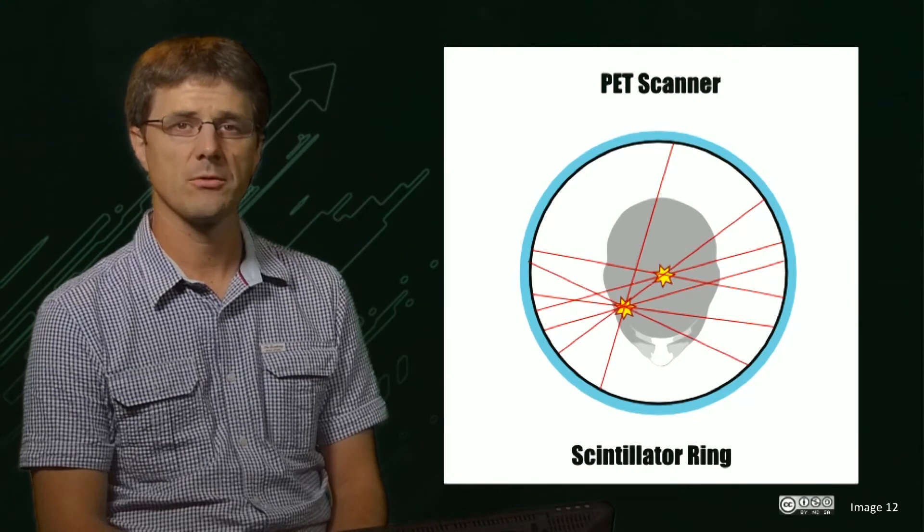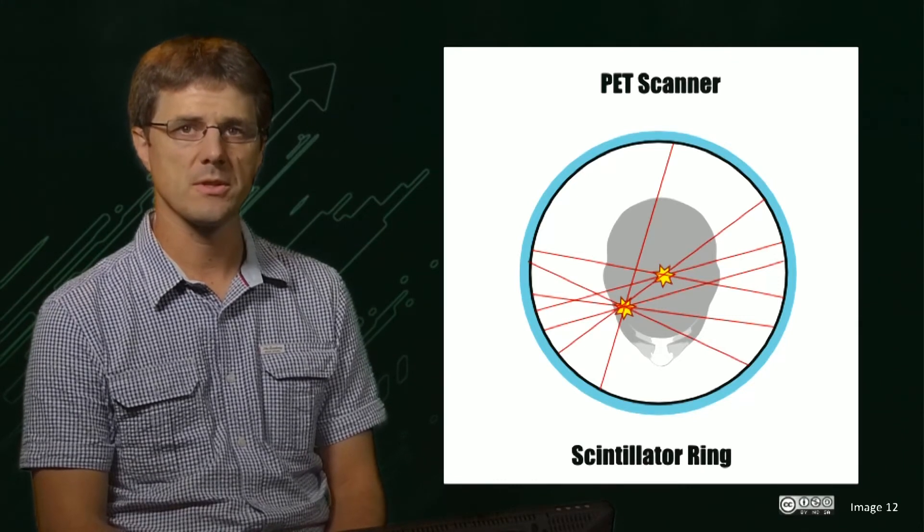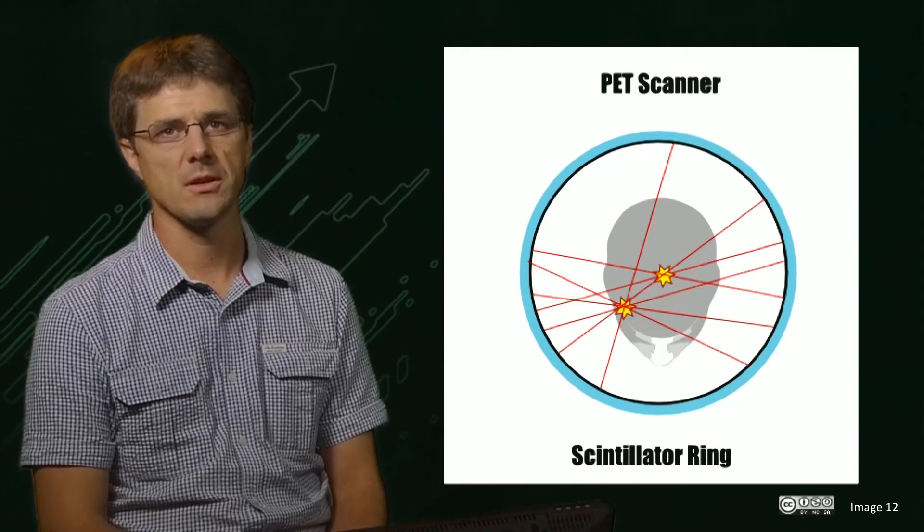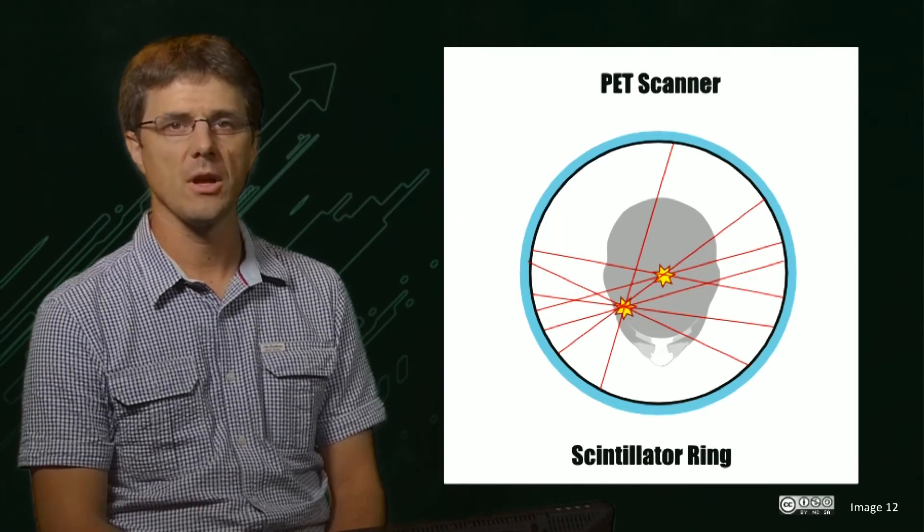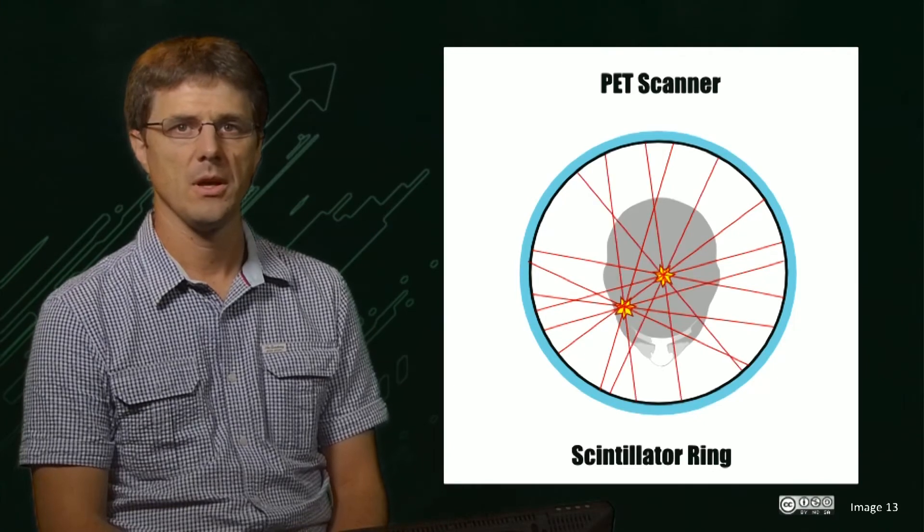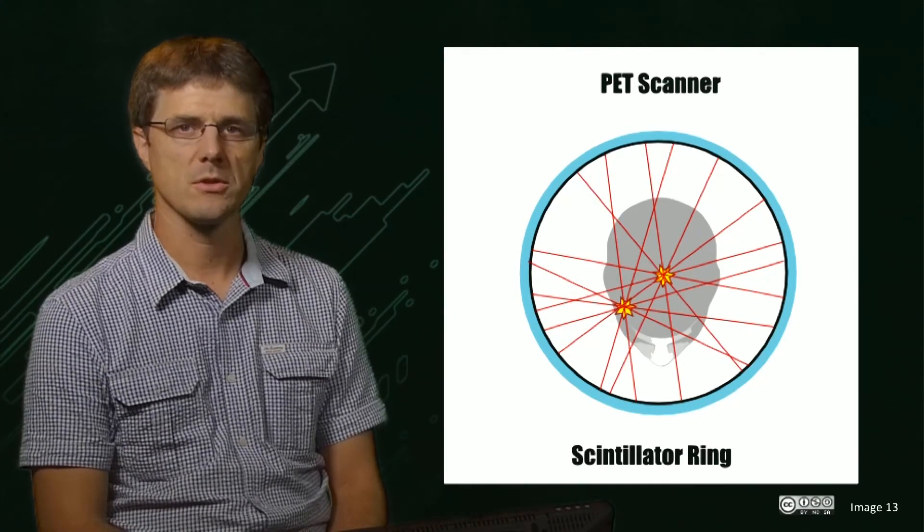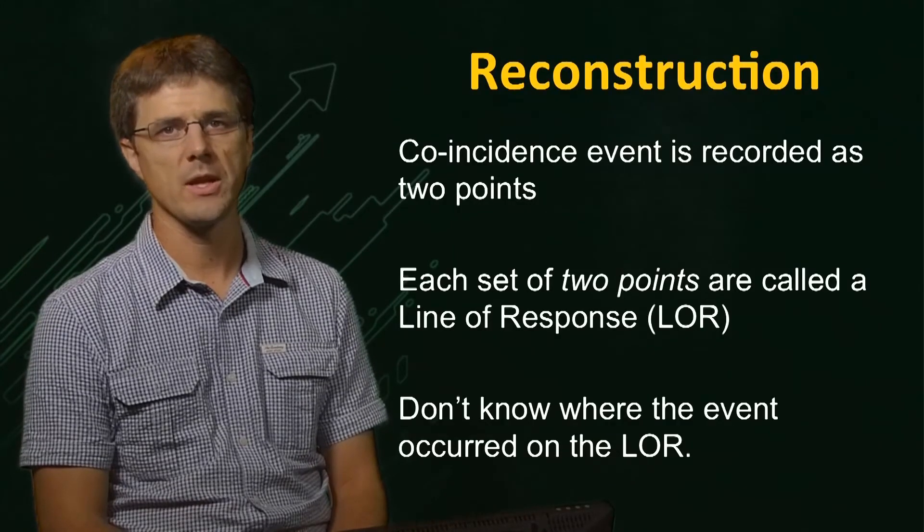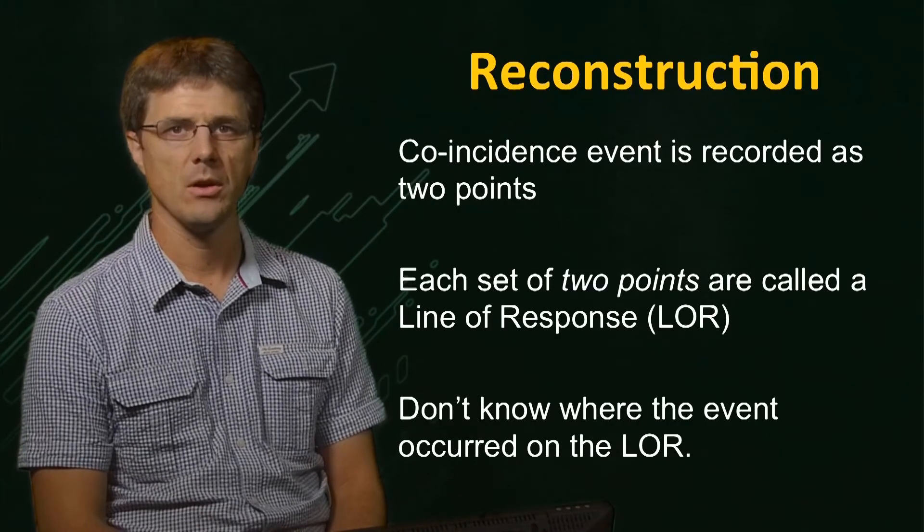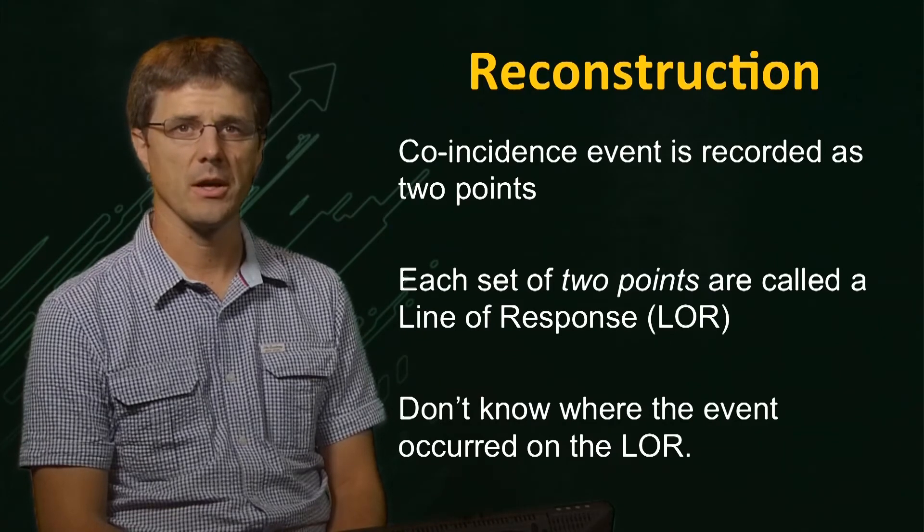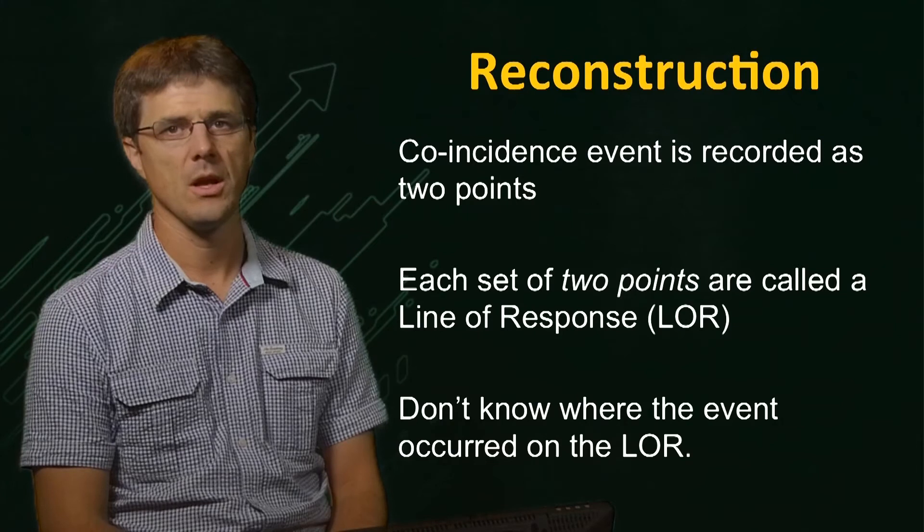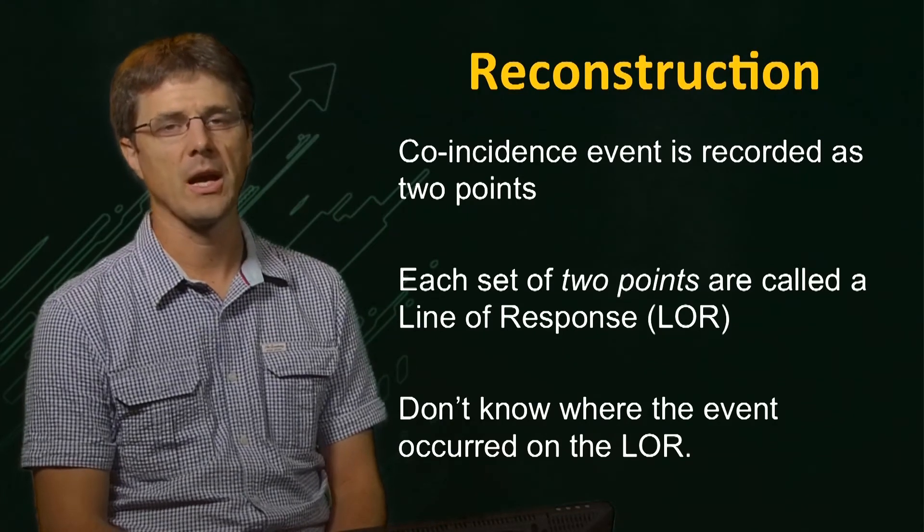The raw output data from the scanner is then a series of points that represent coincidence events. Each event is represented as two points, through which a line can be drawn. This is called a line of response, or LOR. From the data, we don't know where along the LOR the event occurred. More modern detectors with a higher time resolution can give an approximation of where an event occurred, within an accuracy of about 100 millimeters.